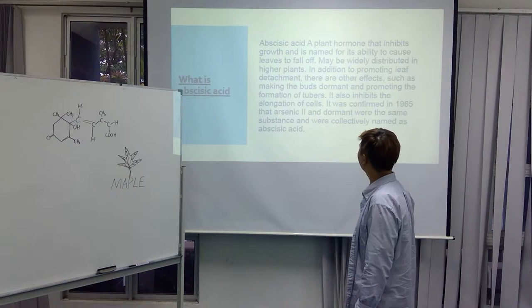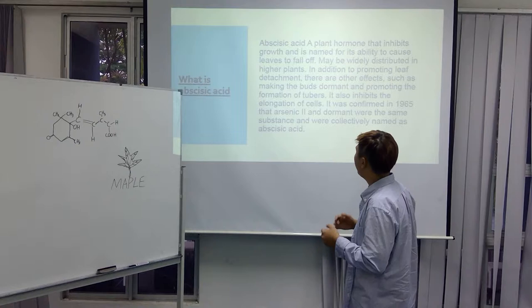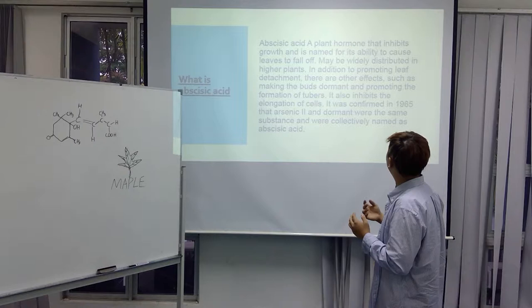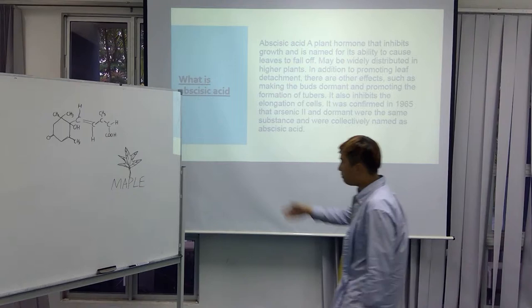So, for the first part, it's about what is abscisic acid. Abscisic acid is a plant hormone that inhibits growth and extends its ability to cause leaves to fall off.